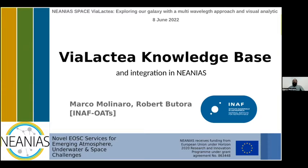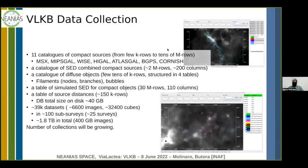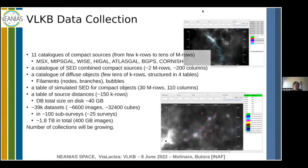In terms of data collection, the VLKB hosts 11 different band catalogs of compact sources. These catalogs contain from a few thousands of rows to tens of millions of rows. For example, the WISE catalog has something like 28 million records. There is also a catalog of combined spectral energy distributions of compact sources, roughly 2 million rows.